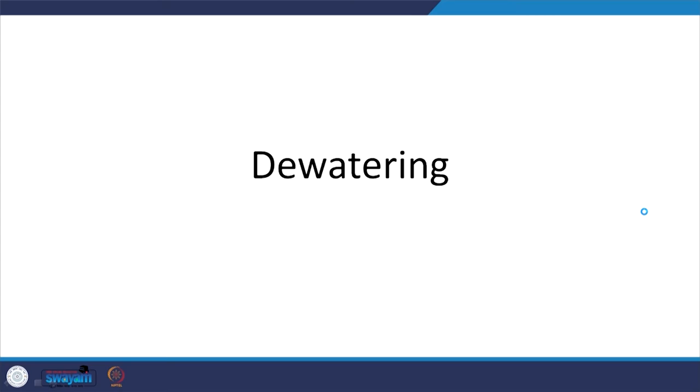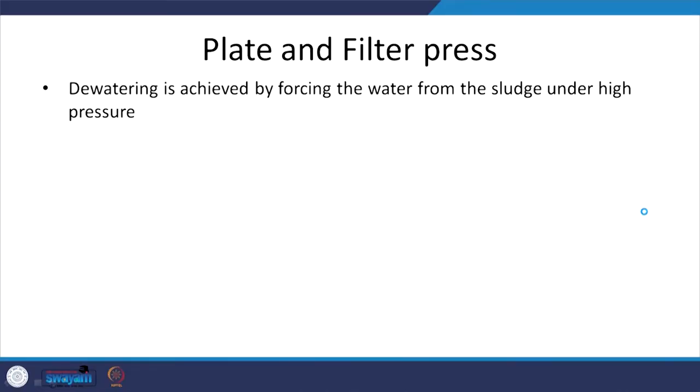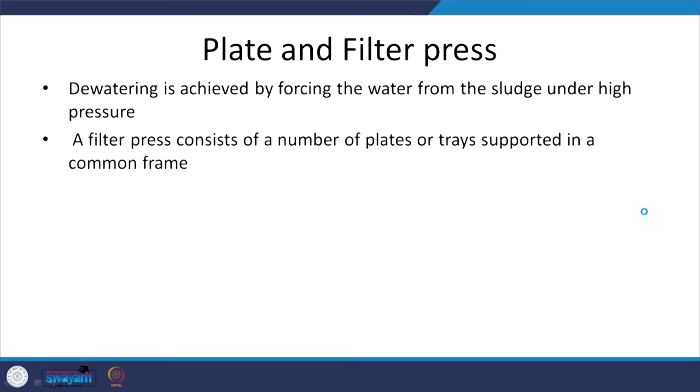Dewatering: now that conditioning is done and the sludge is prepared, we need dewatering because if not, the sludge is going to be difficult to handle. The goal is that the composted, stabilized, and dewatered sludge should be more like a solid that is easy to transport and handle. The plate and filter press forces water from the sludge under high pressure. We have a plate and filter, water comes out through the filter due to pressure.